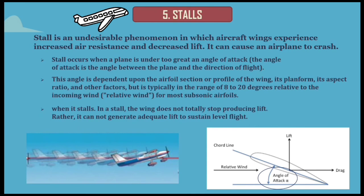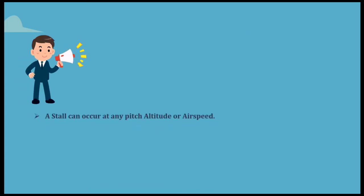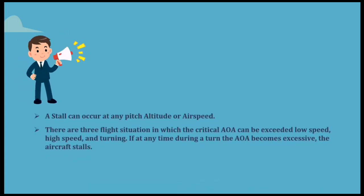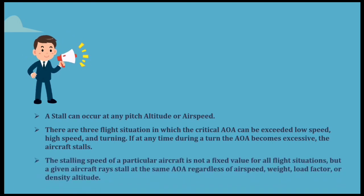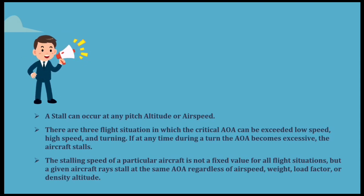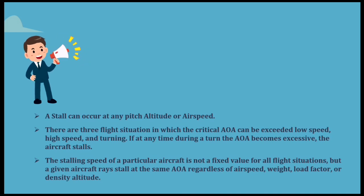When a stall occurs, the wing does not totally stop producing lift. Rather, it cannot generate adequate lift to sustain level flight. A stall can occur at any pitch, altitude, or airspeed. There are three flight situations in which the critical angle of attack can be exceeded: low speed, high speed, and turning. If at any time during a turn the angle of attack becomes excessive, the aircraft stalls. The stalling speed of a particular aircraft is not a fixed value for all flight situations, but a given aircraft stalls at the same angle of attack regardless of airspeed, weight, load factor, or density altitude.